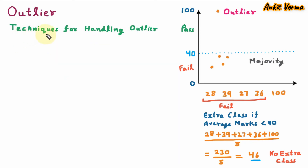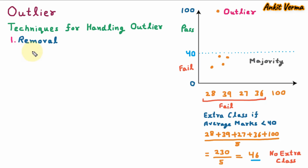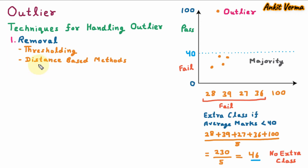Now we are learning techniques for handling outlier. The first technique is removal — the outliers are removed from the dataset. The first is thresholding, where data points exceeding a threshold are removed. Next is distance-based methods, where data points that are very far from their neighbors are removed.